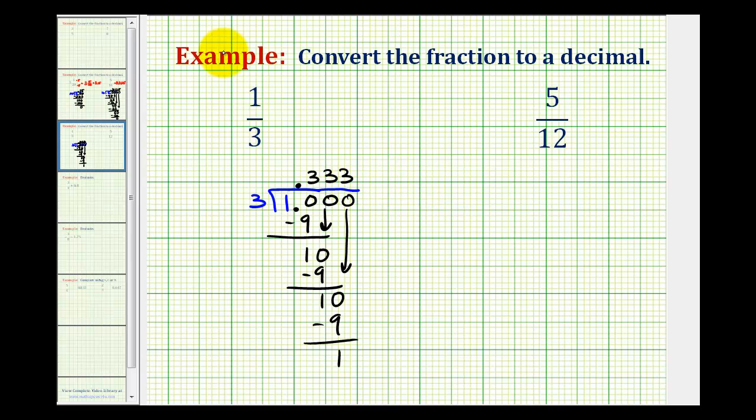So this decimal is repeating. So therefore, one-third is equal to zero point three repeating. And to show this three repeats, we put a bar over the three. We don't ever want to round this, because if we round it, we're actually changing the value, and therefore it's not equal to one-third.